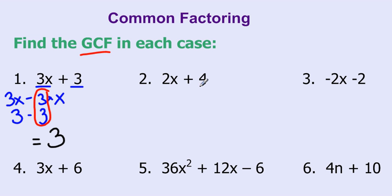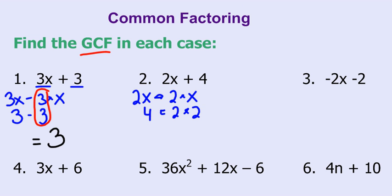Let's look at the next one: 2x and 4. I know 2x is made up of 2 times x, and 4 is made up of 2 times 2. If I look for what's common in both of those, I've got a 2, and then I have an x and another 2, so those aren't common. The only thing common between them is 2, so that is the greatest common factor.